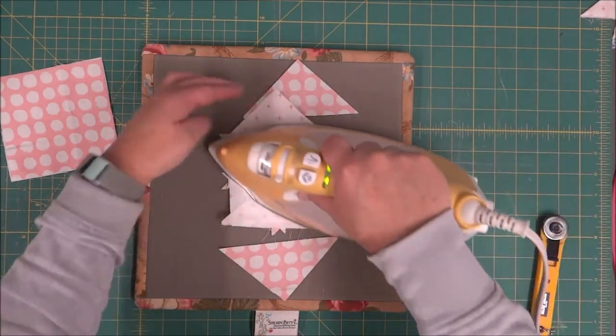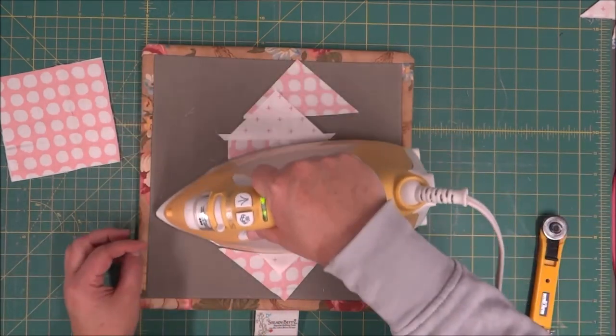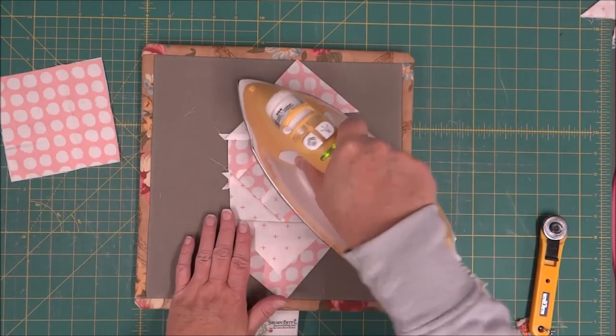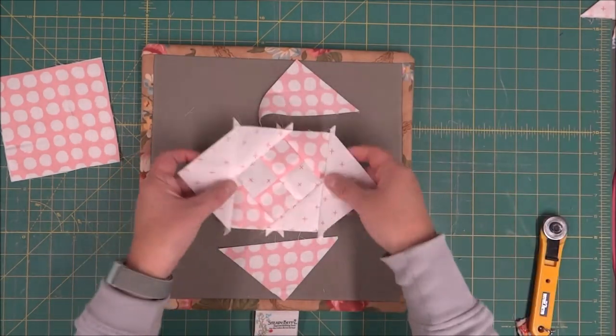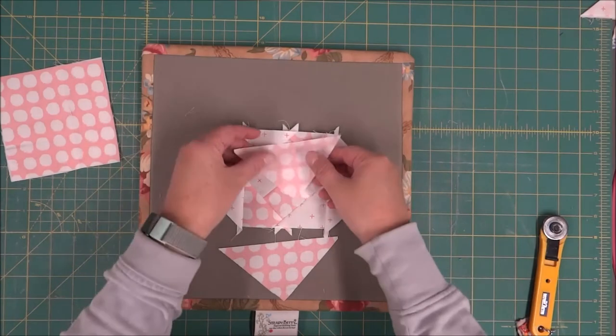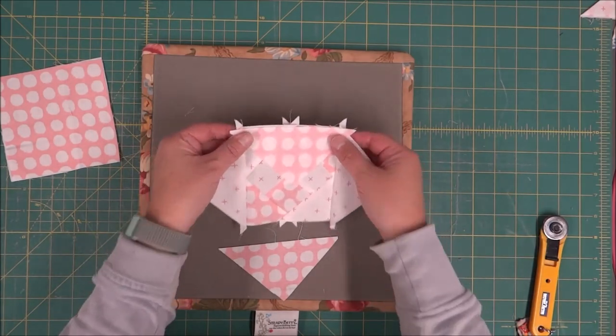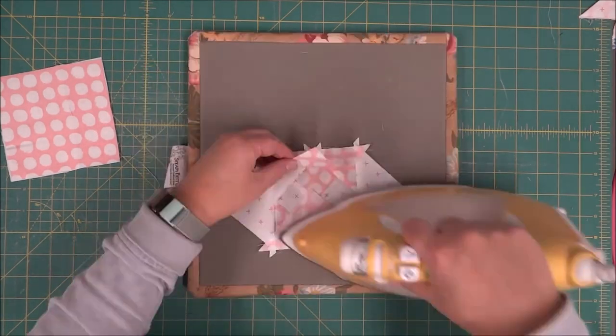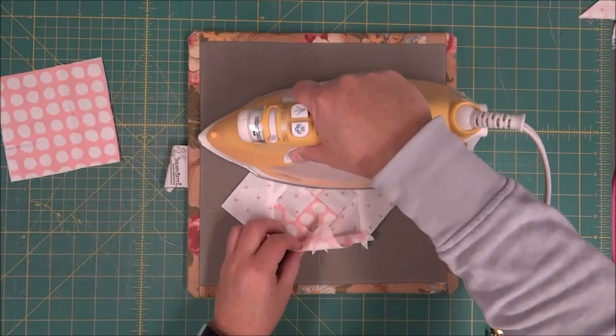Now that you have those sewn on, we're going to go ahead and open them up and give them a good press. Flip this back around. Now we're going to repeat the same process with the next two triangles. So now we're going to press this one open.